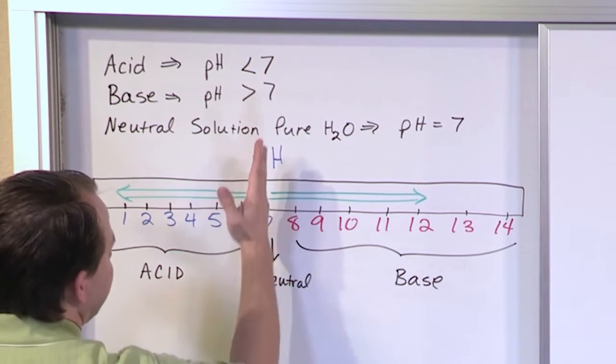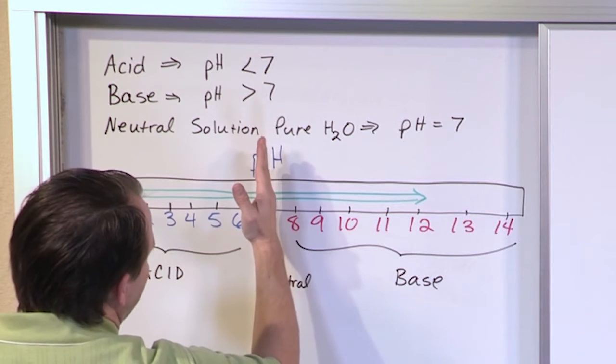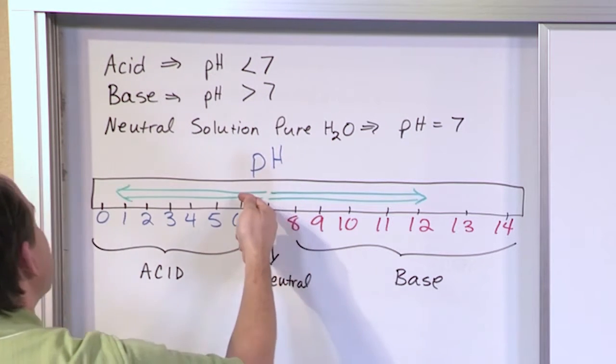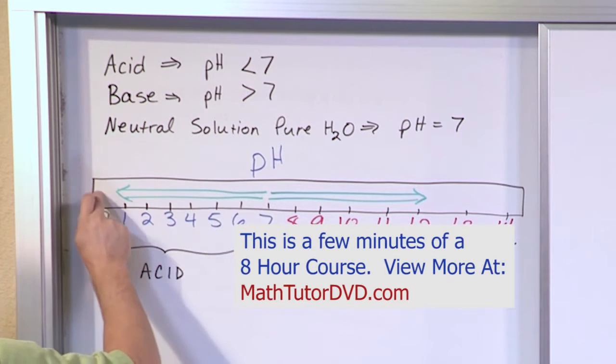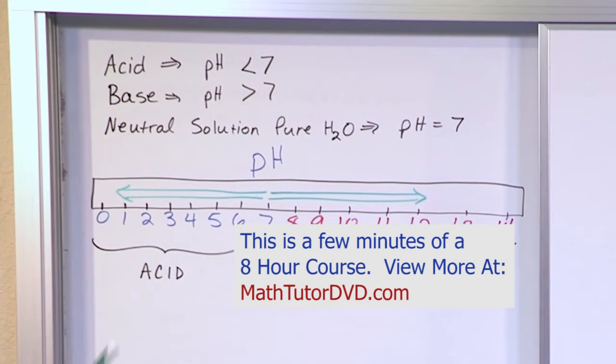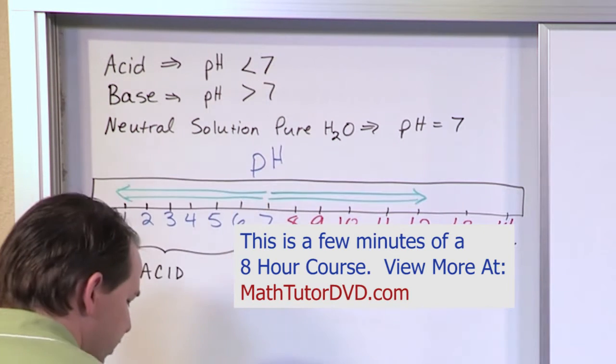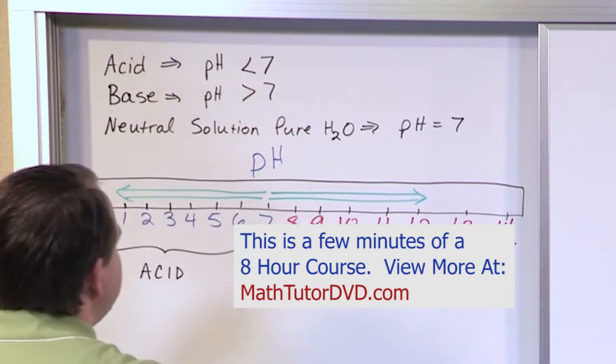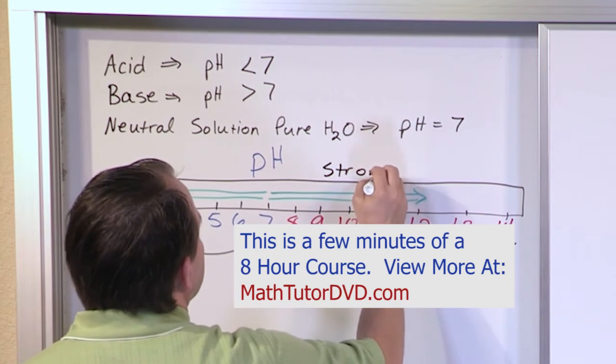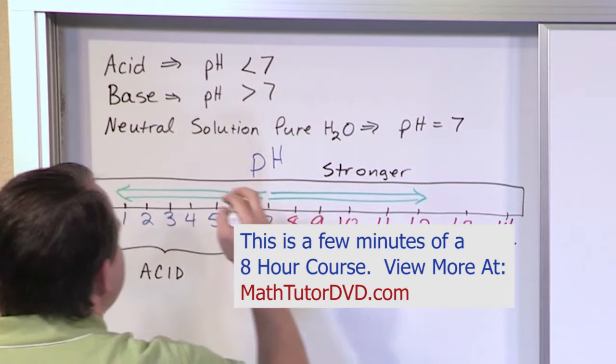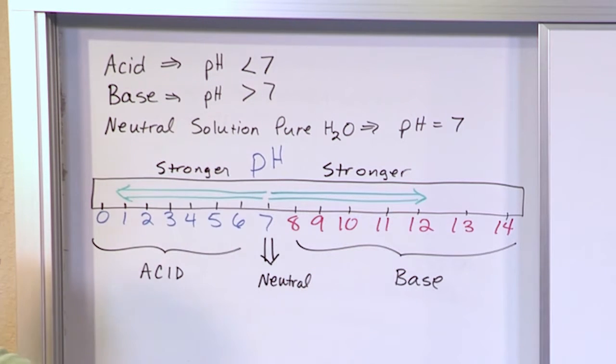You can consider neutral being neither acidic nor basic, zero of either one of those basically. The farther you get away from 7, the more acidic your solution is. The strongest hydrochloric acid you can have is going to be way over here. The strongest base you can get over here. So I'm going to put 'stronger' to indicate that the arrow is pointing to stronger. It's a pretty easy concept.